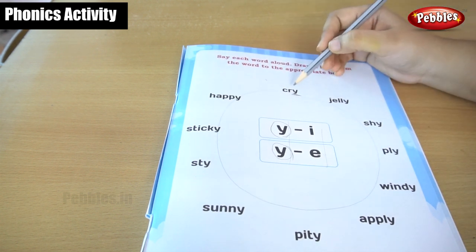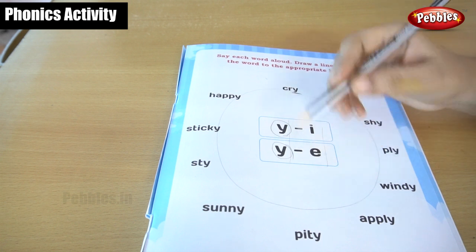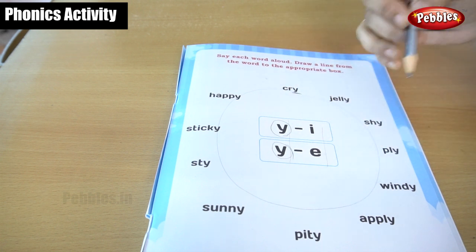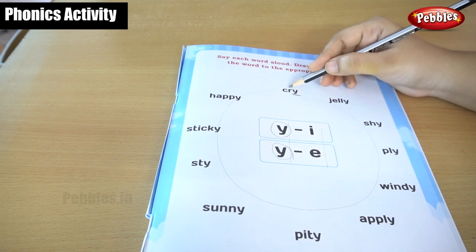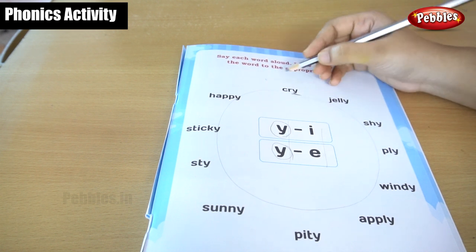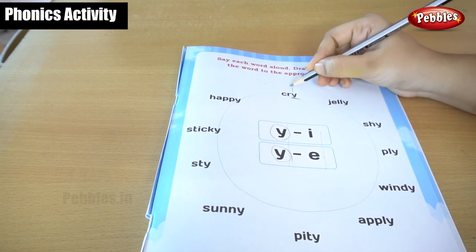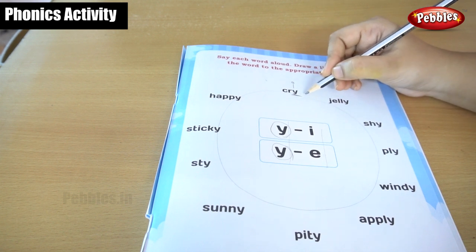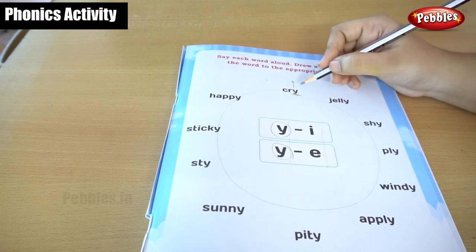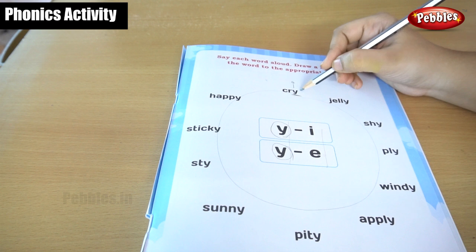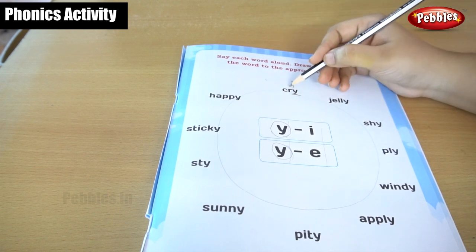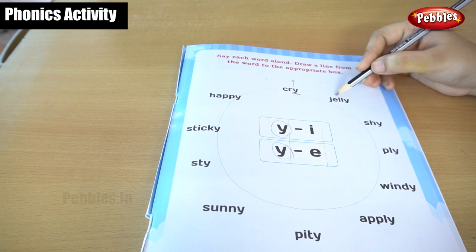Okay, I am going to say each and every word loudly. Cry — C, R, Y — cry. Cry, the end of the word Y is giving the I sound. Isn't it? Cry, C, R, Y — cry.